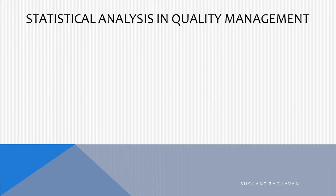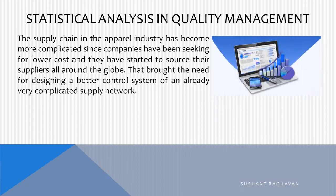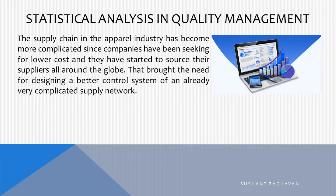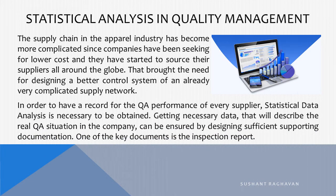Statistical analysis in quality management. The supply chain in the apparel industry has become more complicated since companies have been seeking lower cost and have started to source their supplies all over the globe. That brought the need for designing a better control system of an already very complicated supply network. In order to have a record for the QA performance of every supplier, statistical data analysis is necessary. Getting the necessary data that will describe the real QA situation in the company can be ensured by designing sufficient supporting documentation.